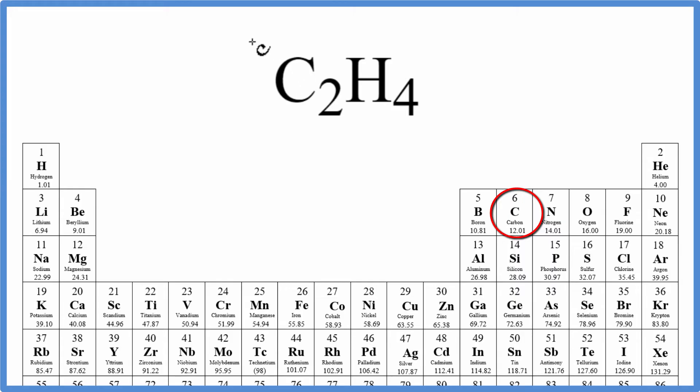So carbon on the periodic table is 12.01 grams per mole. And I won't write grams per mole until we're done with the calculations. Hydrogen, 1.01 grams per mole.